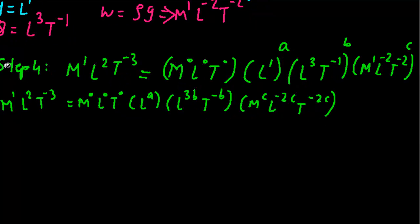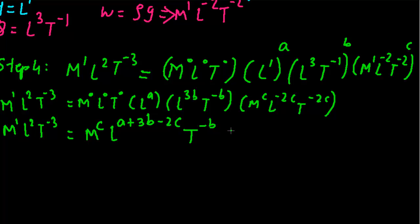Once the equation is formed, simplify it further. M¹L²T⁻³ equals M raised to c, L raised to a plus 3b minus 2c, and T raised to minus b minus 2c. You got M, L, T on the left-hand side and also on the right-hand side. Now all you need to do is compare the powers.